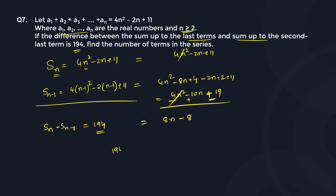So 194 equals 8n minus 6. Wait — I made a small error earlier. The constant term in Sn-1 is 11 plus 2 plus 4, which is 17, not 19. So the difference gives 8n minus 6 equals 194, meaning 8n equals 200, and dividing by 8 gives n equals 25.